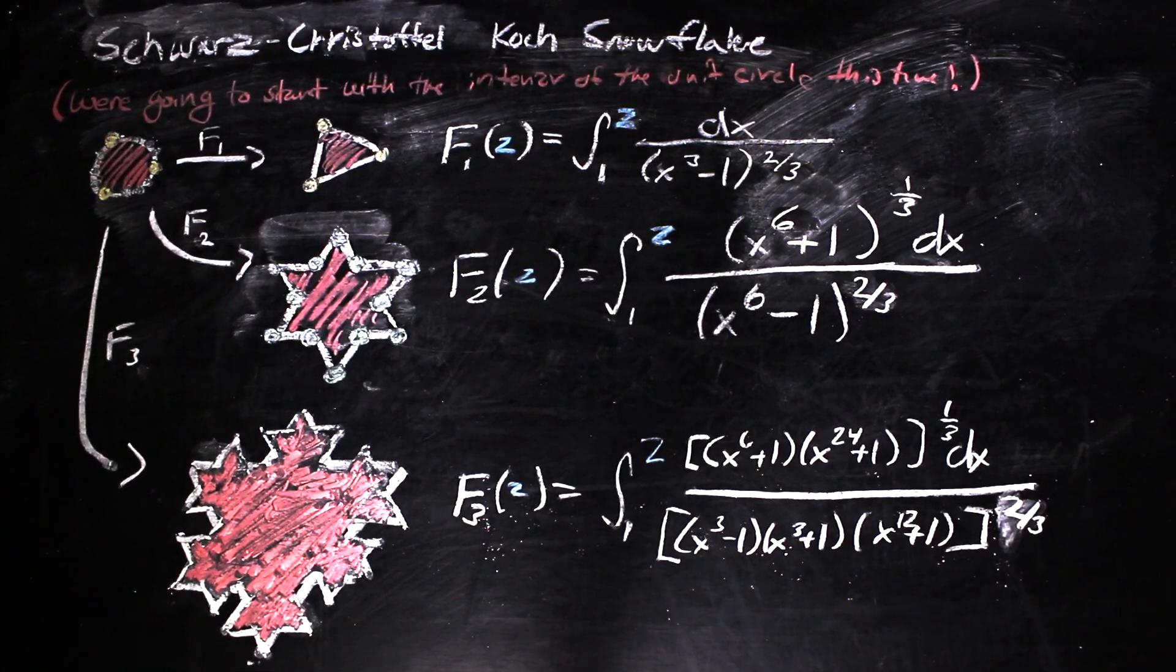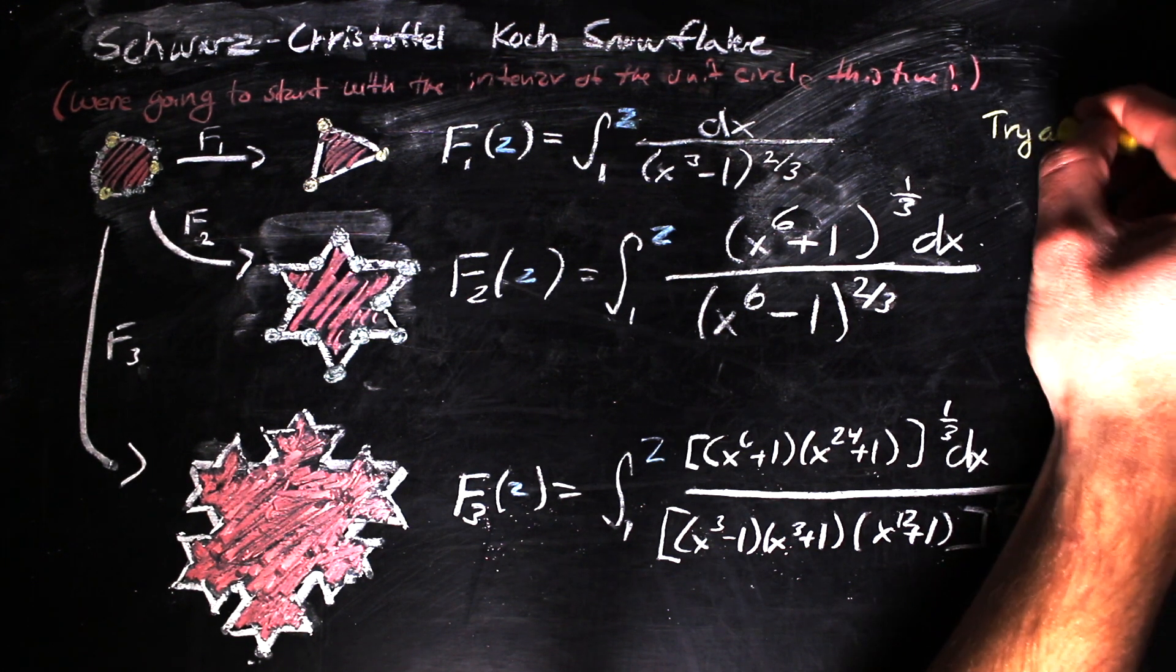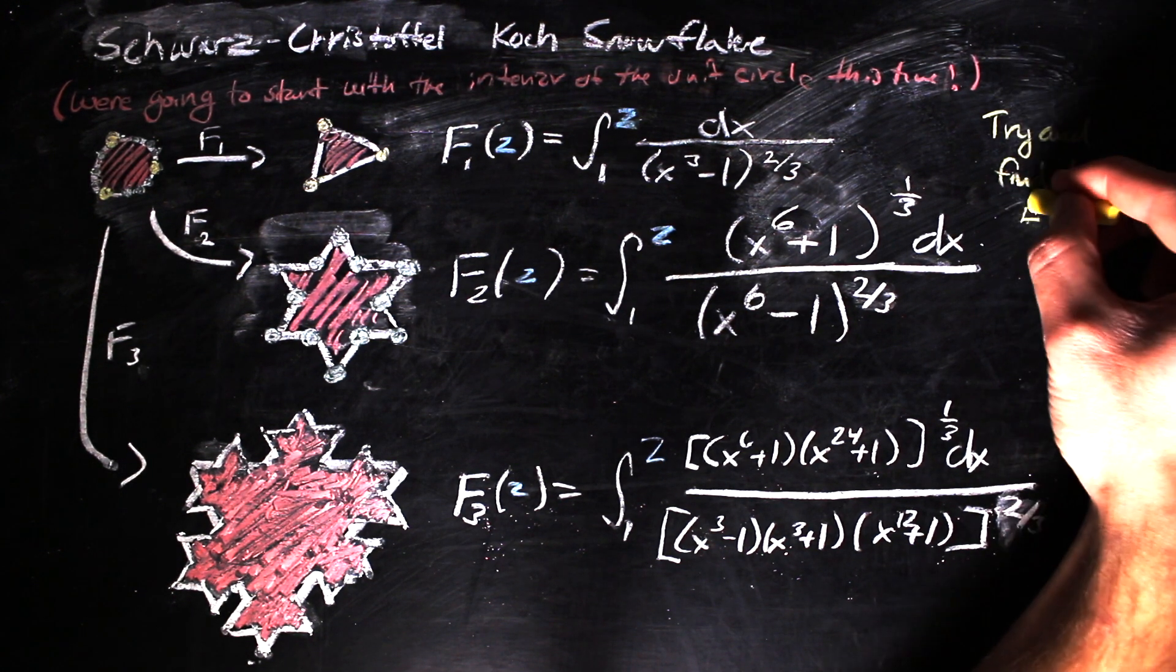They may not look like it, but they are actually kind of similar to how we constructed the general map between the upper half plane and a polygon. And that makes sense because the first three iterations of the Koch construction are polygons with a finite number of vertices.